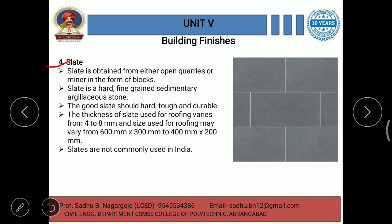There are some special types of roof covering. Slate is obtained from either open quarries or mines in the form of blocks. Slate is a hard, fine-grained, sedimentary argillaceous stone. Good slate should be hard, tough, and durable. The thickness of slate used for roofing varies from 4 to 8 mm, and the size used for roofing may vary from 600 mm × 300 mm to 400 mm × 200 mm. Slates are not commonly used in India — they are rarely used.